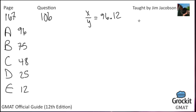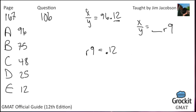We know that x divided by y equals some number, remainder 9. Decimals and remainders are basically the same thing. When we first learned division we used remainders; once we learned decimals, we converted those remainders into things after the decimal point. So remainder 9 is the same thing as the 0.12 left over — x divided by y is 96.12, meaning y goes into x 96 times completely and 0.12 times partially.